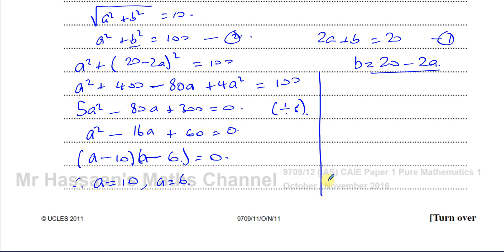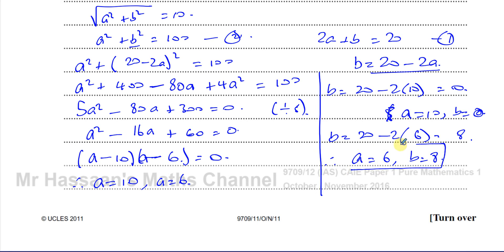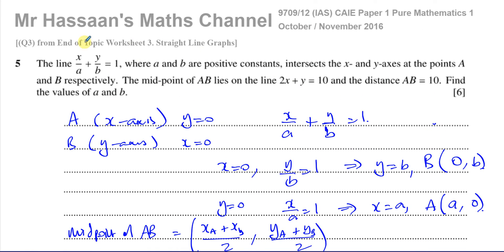Finding the corresponding b values using b = 20 − 2a: when a = 10, b = 20 − 20 = 0; when a = 6, b = 20 − 12 = 8. So the solutions are a = 10, b = 0, and a = 6, b = 8. Both pairs satisfy the original conditions: the midpoint lies on 2x + y = 10 and the distance AB = 10.